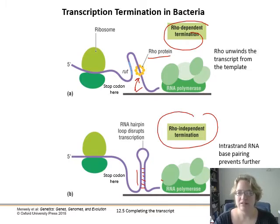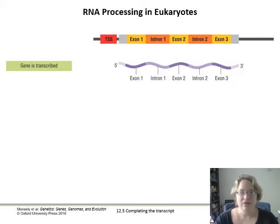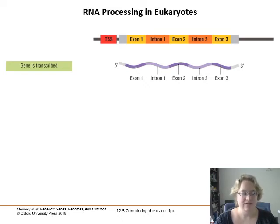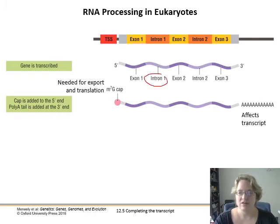There are just two different ways that bacteria terminate transcription — that's basically what to take from that. Meanwhile, in eukaryotes, once we've transcribed our gene, it's not ready yet because we still have all these pesky introns that need to be removed, because we just want the exons.